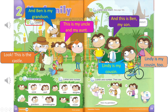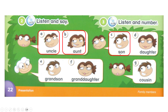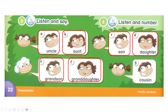Track A37. Page 22. Activity 2. Listen and say. A. Uncle. B. Aunt. C. Son. D. Daughter. E. Grandson. F. Granddaughter. G. Cousin.